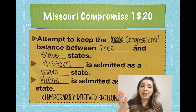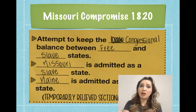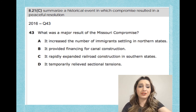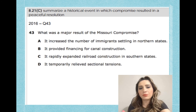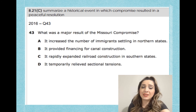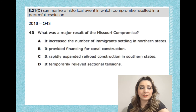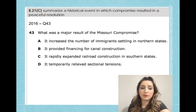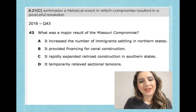Now let's check for understanding. The question is: what was a major result of the Missouri Compromise? A — it increased the number of immigrants settling in northern states; B — it provided financing for canal construction; C — it rapidly expanded railroad construction in southern states; or D — it temporarily relieved sectional tensions.